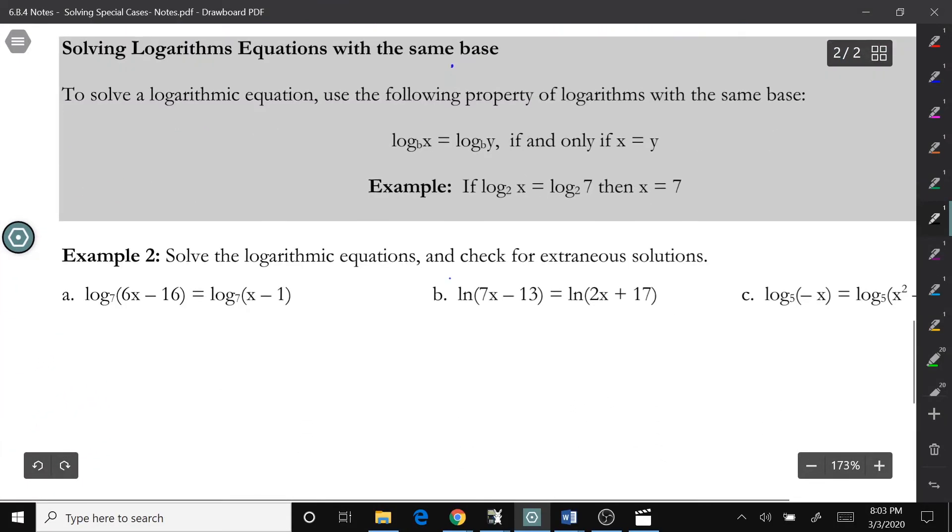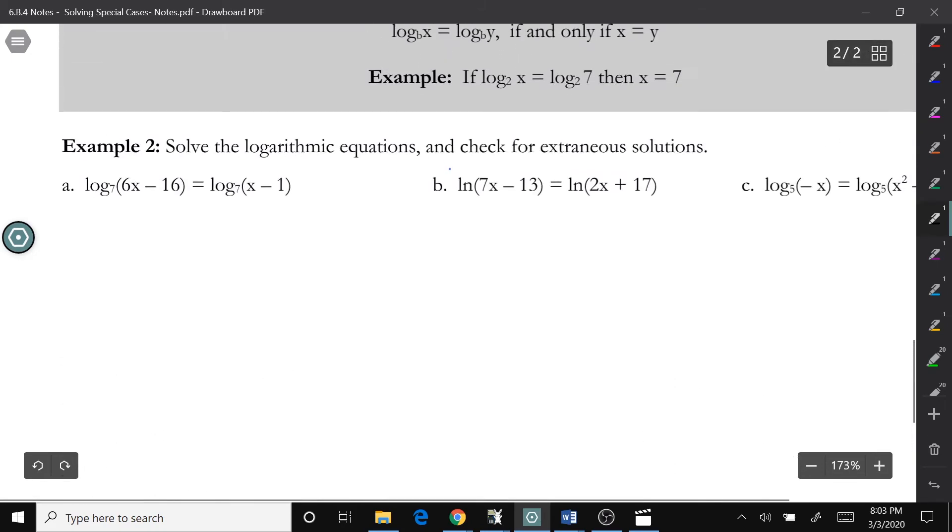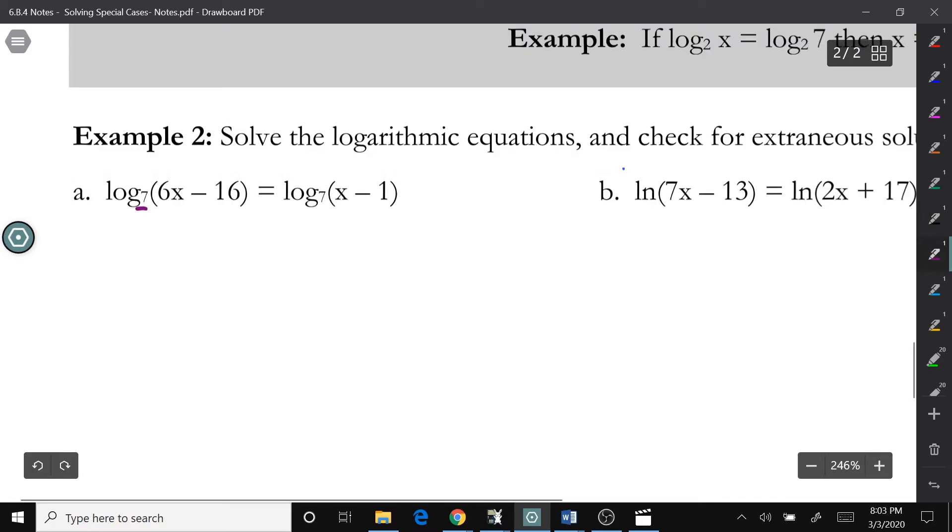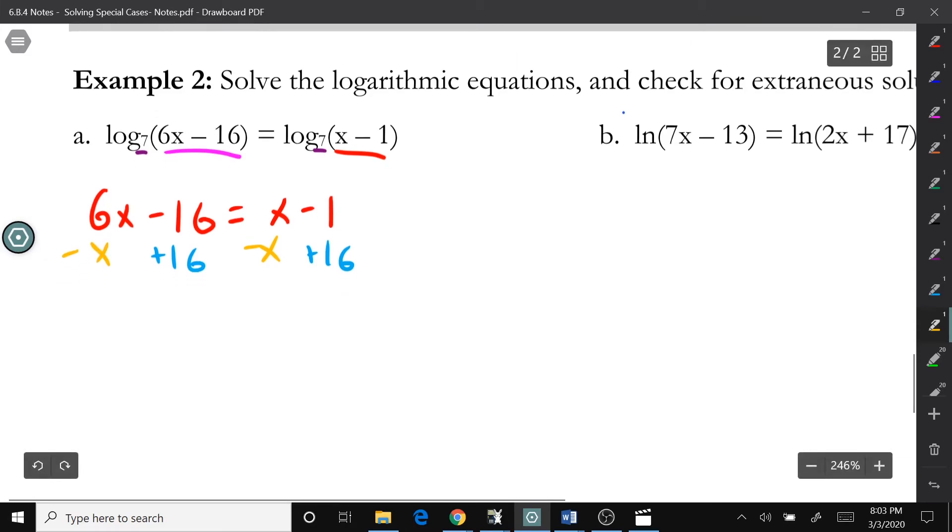So, just like what we dealt with up above, with exponents, if logs have the exact same base, base 7, base 7, we can just set the inside stuff equal to each other. So, 6x minus 16 equals x minus 1. And then we can solve that. So, plus 16, minus x. So, 5x will equal 15, 6x will equal 15. X will equal 3.